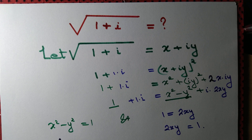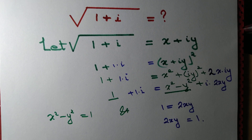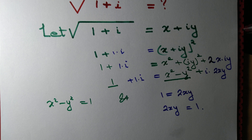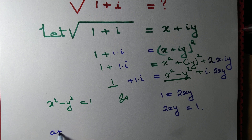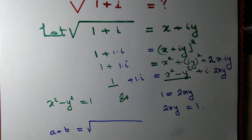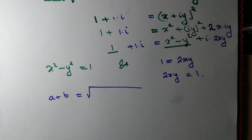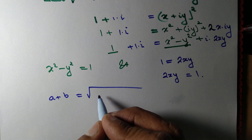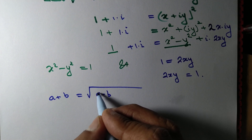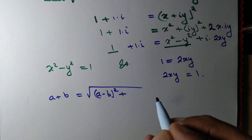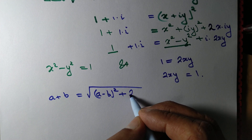Now we know x² - y² and we know 2xy. Can we solve for x and y? Yes, of course — there are many methods. The simplest is to write (a+b) = √((a-b)² + 4ab), which allows us to find x² + y².